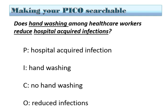Here is an example of a PICO question: Does hand washing among healthcare workers reduce hospital-acquired infections? The P portion is the problem of hospital-acquired infection, the intervention is hand washing, the comparison intervention is no hand washing, and the expected outcome is reduced infections.